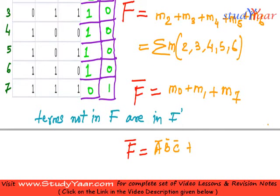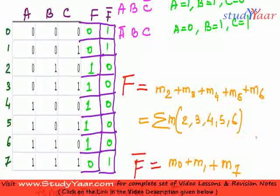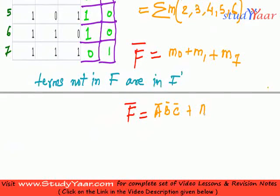Then M1 is what? M1 is A0, B0 and C1. So this is going to be A bar, B bar and C.